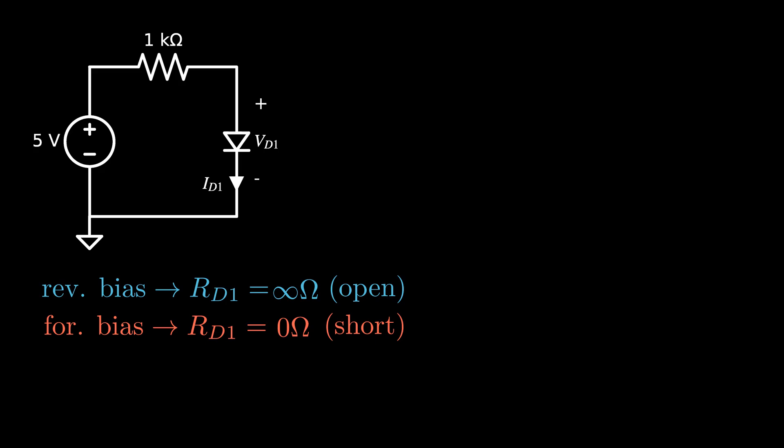This is the other extreme value of resistance the diode can take on, in this case on the far right of the forward region. In between these two extremes lies an infinite set of finite resistances. So let's think of the diode as a simple resistor. The resistor, R sub D1, can take on any value between zero and infinity Ohms.